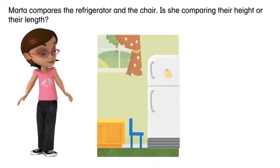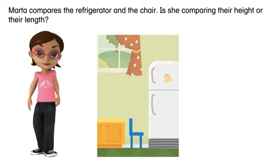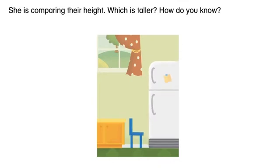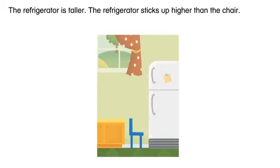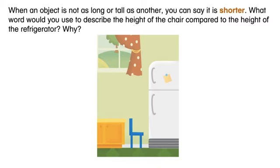Marta compares the refrigerator and the chair. Is she comparing their height or their length? She is comparing their height. Which is taller? How do you know? The refrigerator is taller. The refrigerator sticks up higher than the chair. When an object is not as long or tall as another, you can say it is shorter. What word would you use to describe the height of the chair compared to the height of the refrigerator? Why?